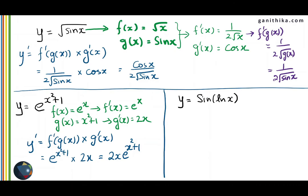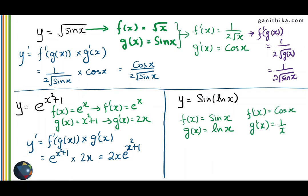Next example: sin of ln of x. Identifying the two functions — sin x is one function, ln of x is another function. The outer function is sin x, the inner function is ln x. Differentiation gives f dash of g of x which is cos of ln of x, multiplied by g dash of x which is 1 over x. So the derivative of sin of ln of x is cos of ln x over x.